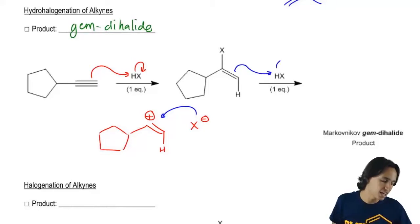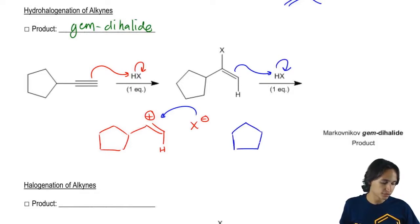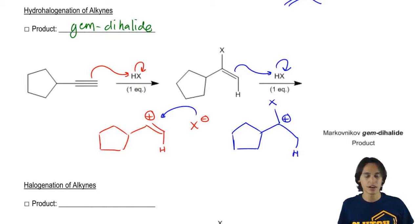So then I would get this double bond attacking the H, kicking out the X. What I would wind up getting is a carbocation that now looks like this, where my X is there, my H is there.